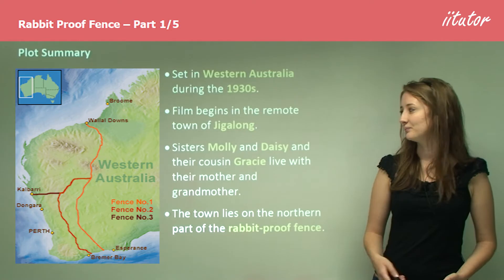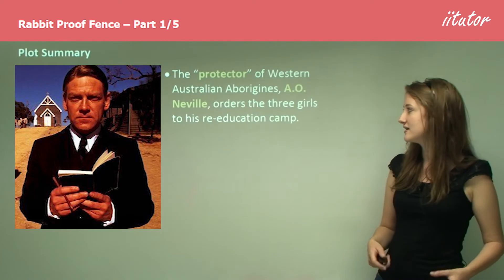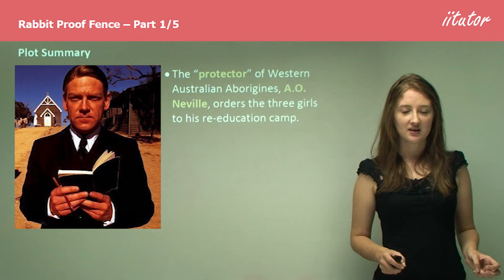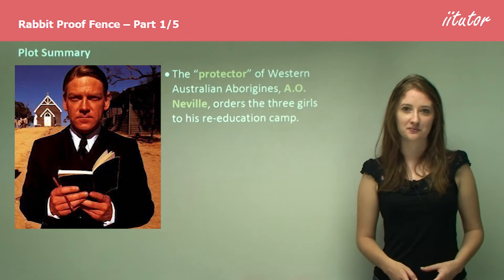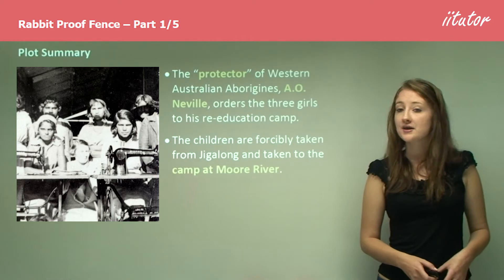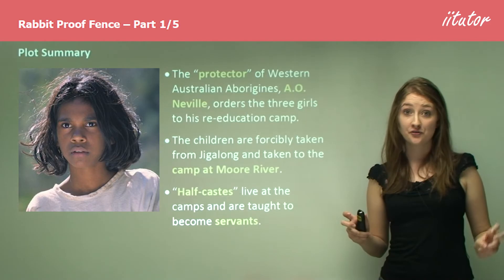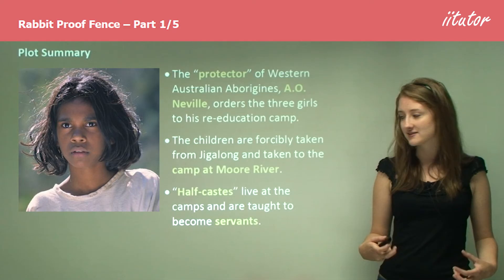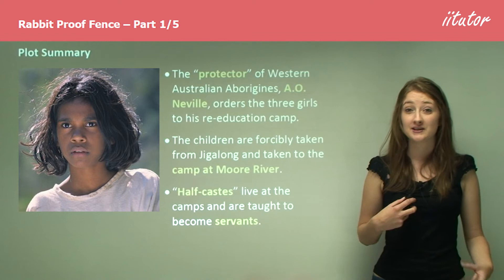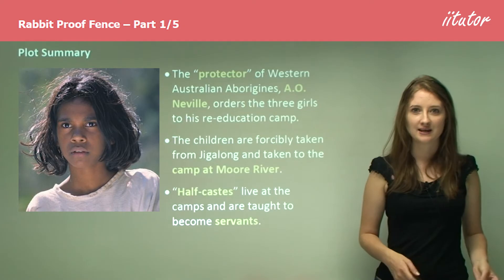The protector of Western Australian Aborigines, A.O. Neville, orders these three girls to his re-education camp. The children are forcibly taken from Jigalong and taken to this camp at Moore River, where they're put into a completely new environment. This camp is where the half-castes — the offensive term used to describe children half Aboriginal and half white — live and are taught to become servants. The aim was that all their Aboriginality would be taken away from them, bred out, and new white skills would replace these old skills which weren't really considered important anymore.